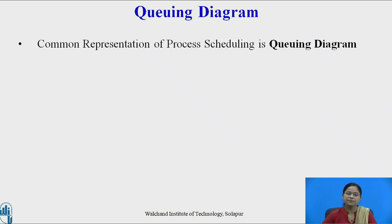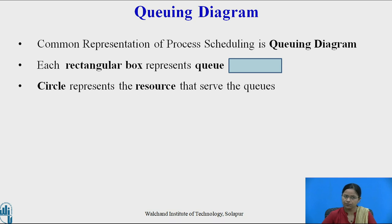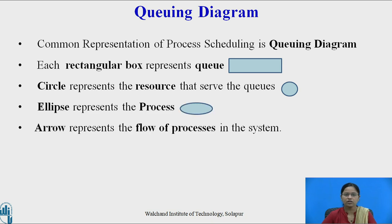The common representation of process scheduling is a queuing diagram. In a queuing diagram, each rectangular box represents a queue, a circle represents the resource that serves the queue, an ellipse represents the processes, and an arrow represents the flow of the process in the system.